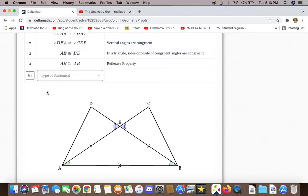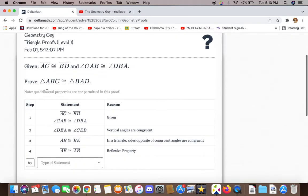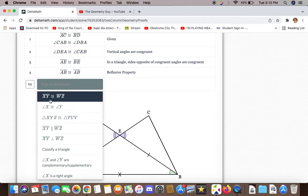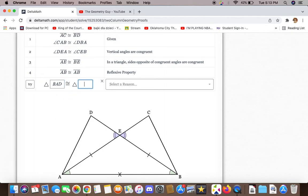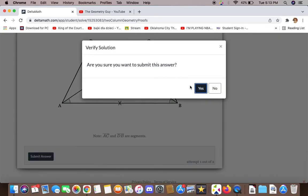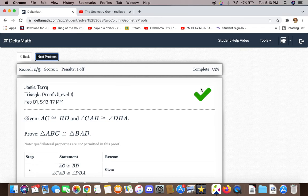We now have enough information to prove that ABC is congruent to BAD, and the reason for that is side-angle-side. And there we go.